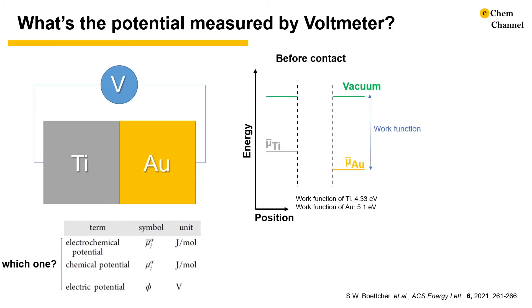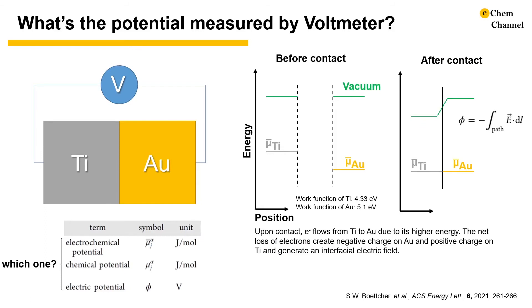which is the energy required to move an electron from a metal to vacuum. When one draws an energy diagram, it is the difference between the vacuum energy and the Fermi level of the material. Titanium has a smaller work function and therefore it has a higher electrochemical potential energy of electrons. Upon contact, electrons transfer from titanium to gold until the electrochemical potential of electrons in both metals is equal, generating an interfacial electric field. Since the electric potential is defined as the integral of electric field over distance, this contact generates an interfacial electric potential.